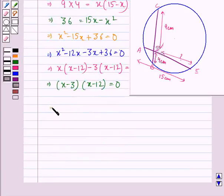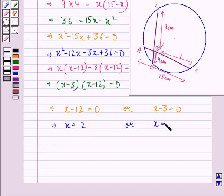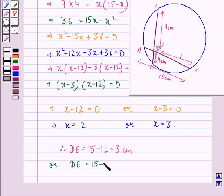This implies either X minus 12 is equal to 0 or X minus 3 is equal to 0. This implies that X is equal to 12 and this implies that X is equal to 3. Therefore, DE will be 15 minus 12, that is, 3 cm or DE will be 15 minus 3, that is, 12 cm.